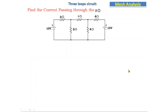Hello everyone, today we are going to discuss mesh analysis. In the previous classes we discussed mesh analysis with three loops in a circuit — how to apply mesh analysis, write the equations, calculate the current passing through each resistor by finding the loop currents first. Today we will again see how to write mesh equations for three loops, find the loop currents, and then find the current passing through each individual resistor.